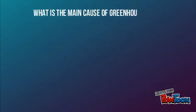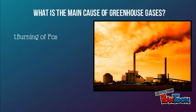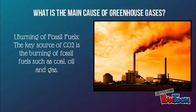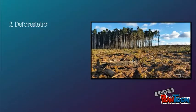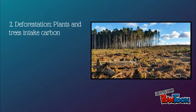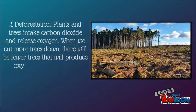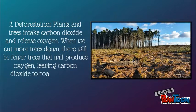What is the main cause of greenhouse gases? 1. Burning Fossil Fuels: The key source of carbon dioxide is the burning of fossil fuels such as coal, oil, and gas. 2. Deforestation: Plants and trees intake carbon dioxide and release oxygen. When we cut more trees down, there will be fewer trees that will produce oxygen, leaving carbon dioxide to roam in the air.